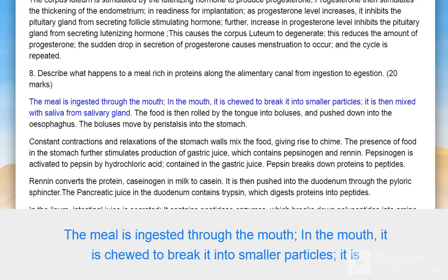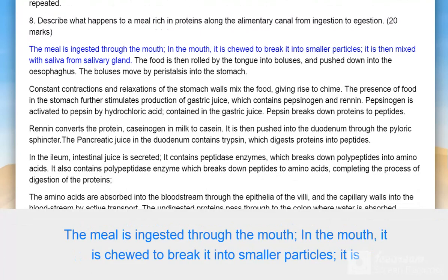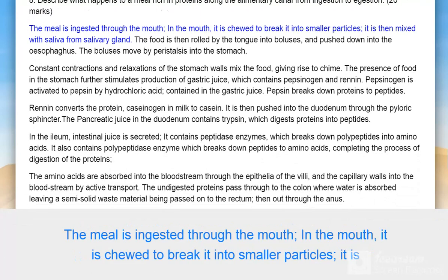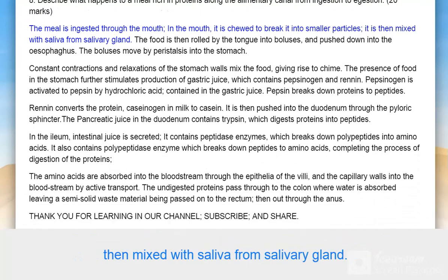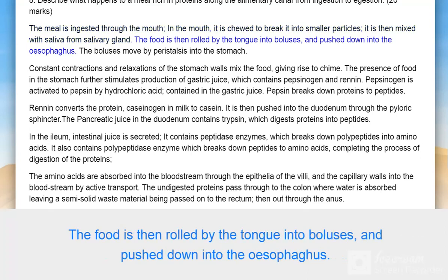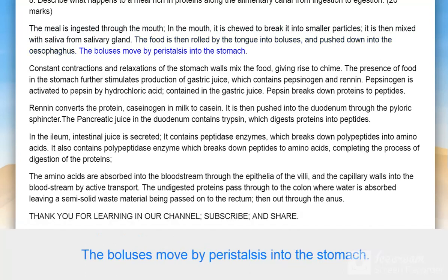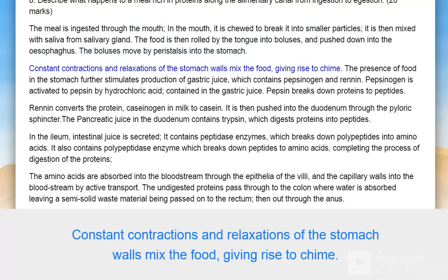The meal is ingested through the mouth, where it is chewed to break it into smaller particles and mixed with saliva from the salivary glands. The food is then rolled by the tongue into boluses and pushed down into the esophagus. The boluses move by peristalsis into the stomach. Constant contractions and relaxations of the stomach walls mix the food, giving rise to chyme.